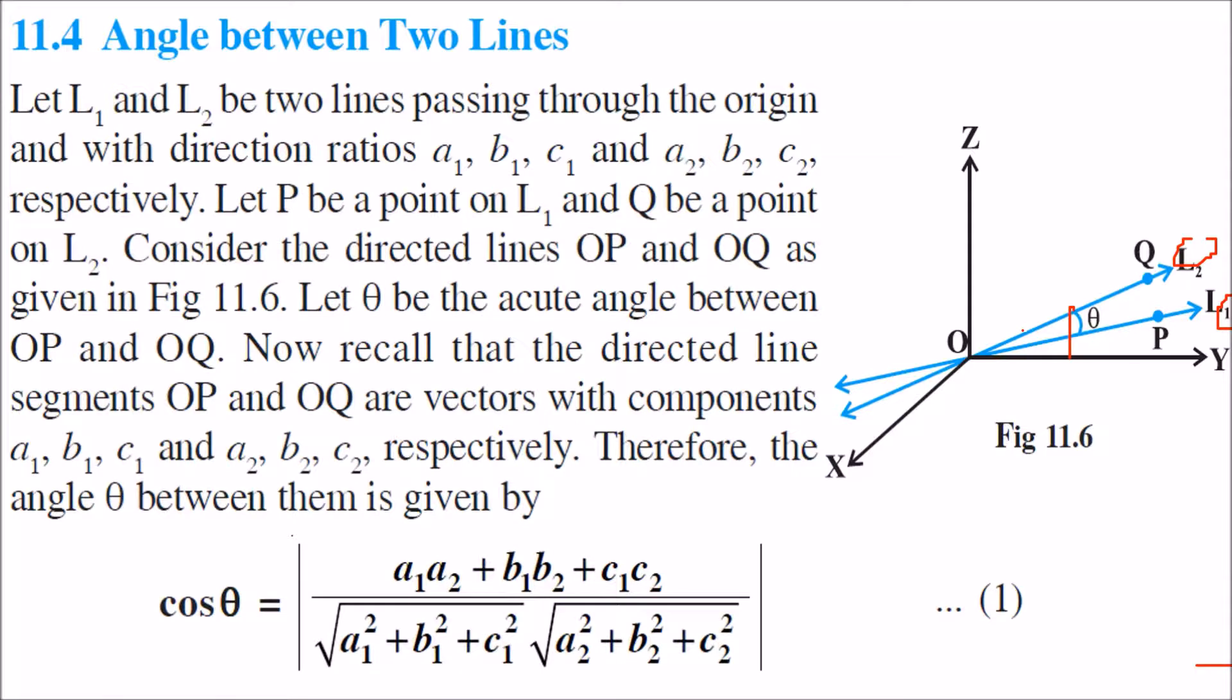These are the lines and they are passing through the origin, and they have direction ratios as a1, b1, c1 and a2, b2, c2.